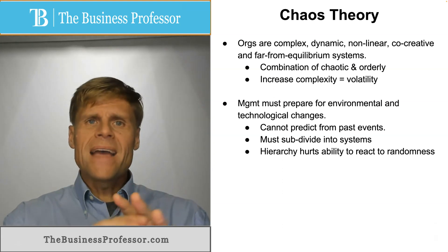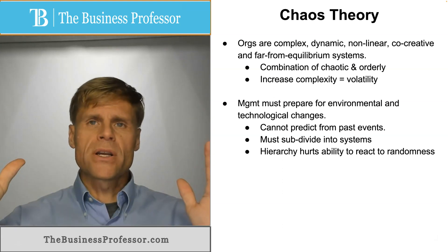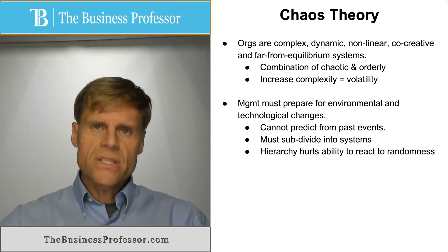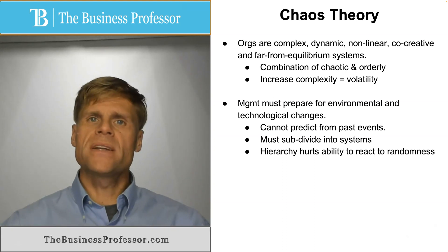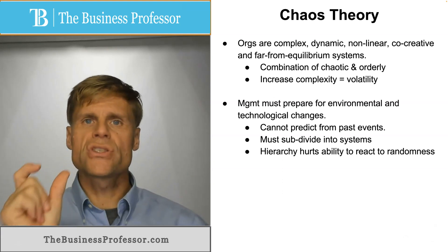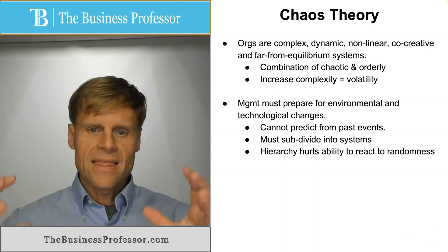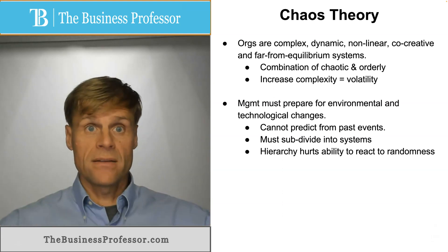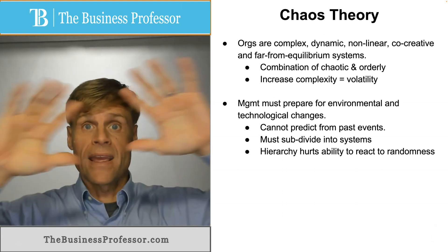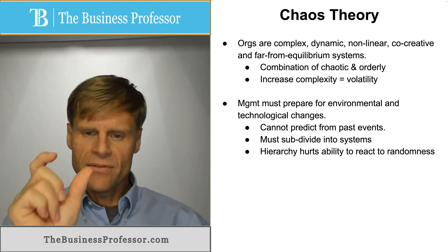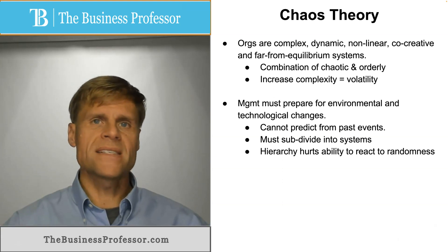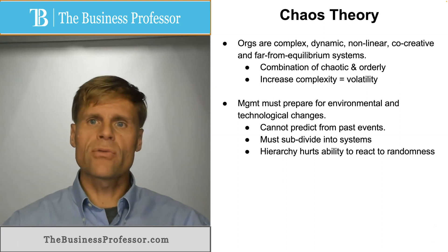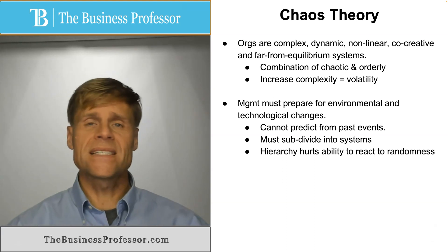Simply put, as the organization becomes more and more complex, you must continue to subdivide the operations of the organization into subsystems whereby they interact collectively together at a larger level. But if you can break down the individual processes into systems, then they can, to a certain extent, self-regulate to a greater extent.